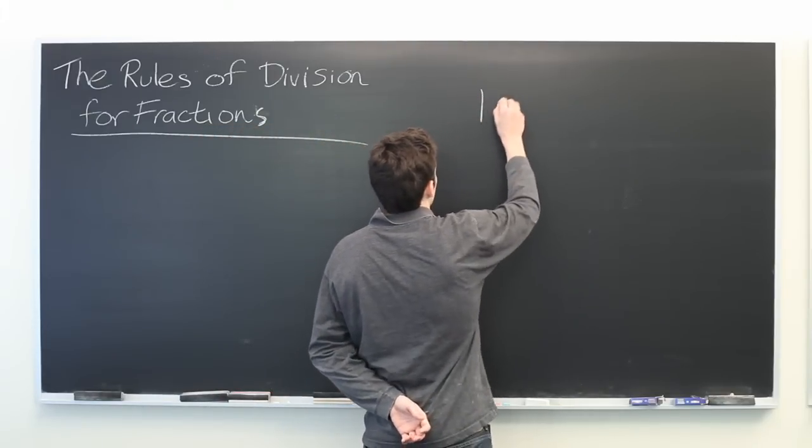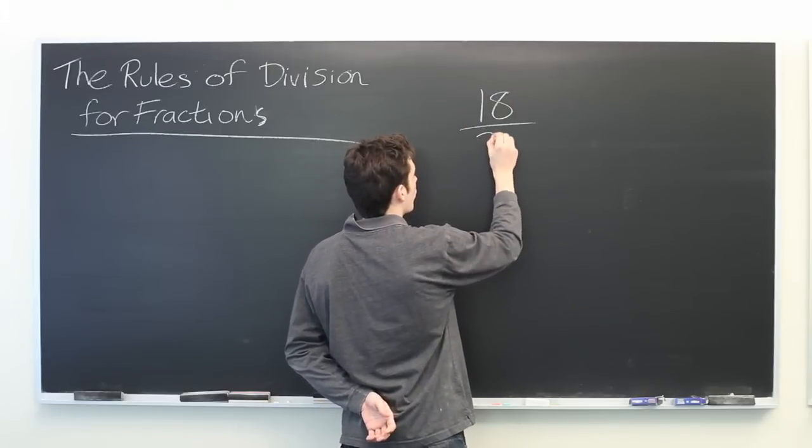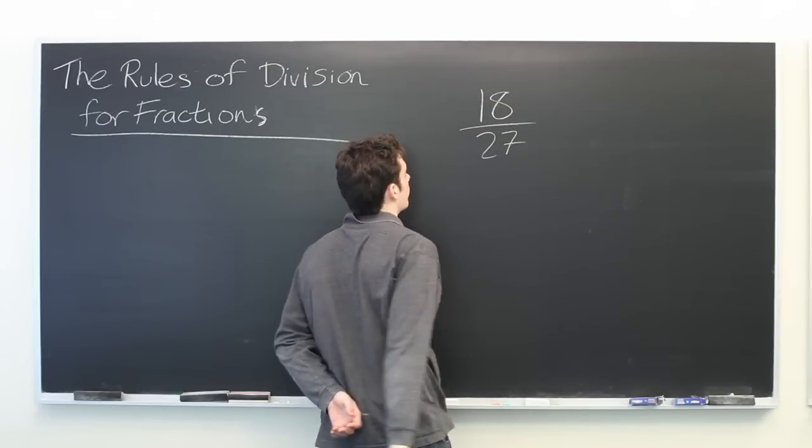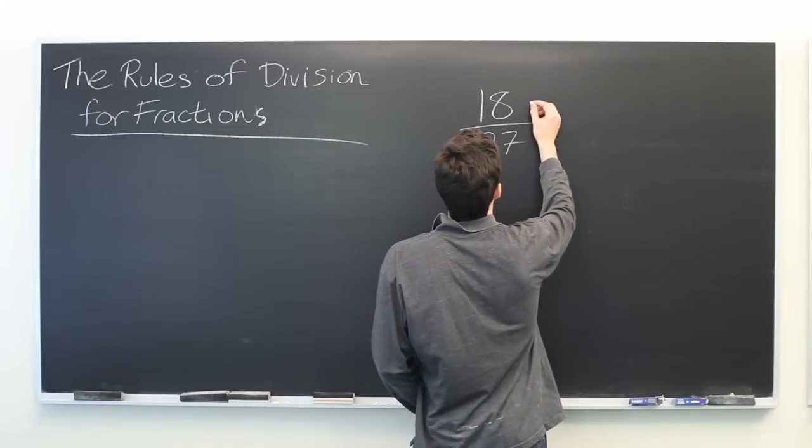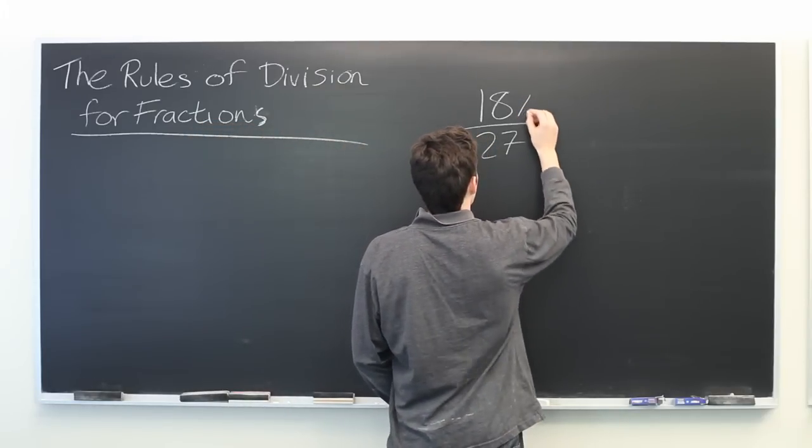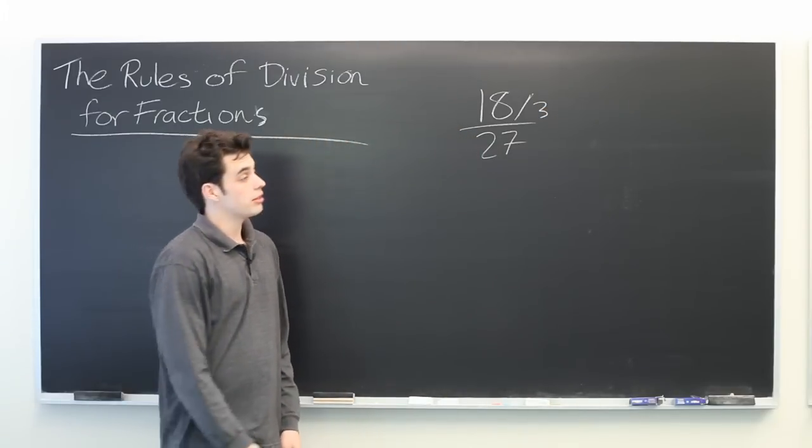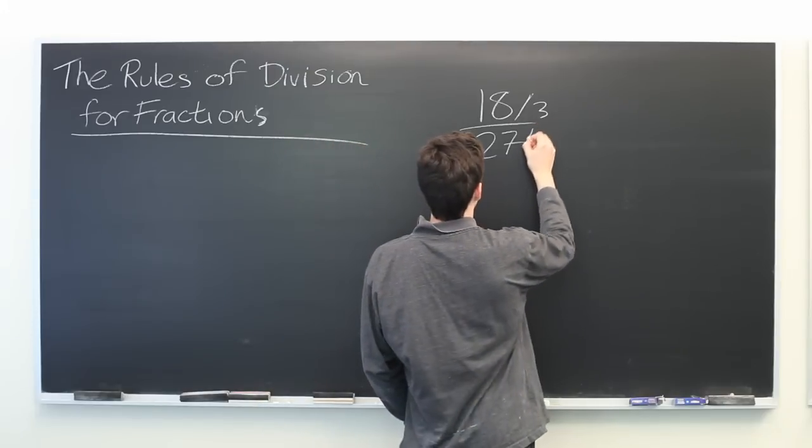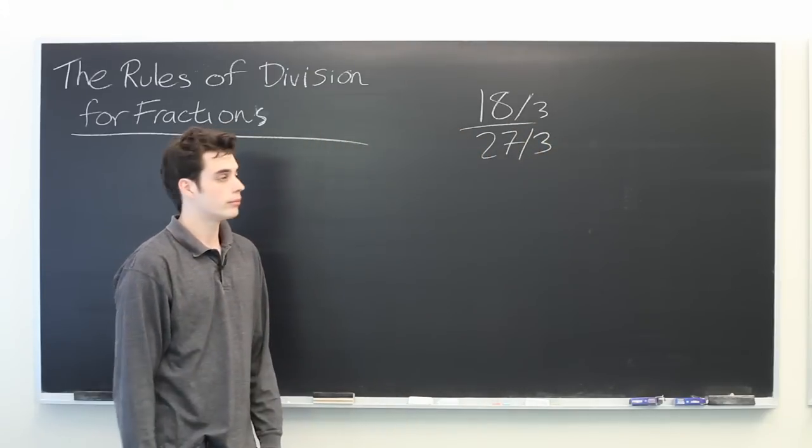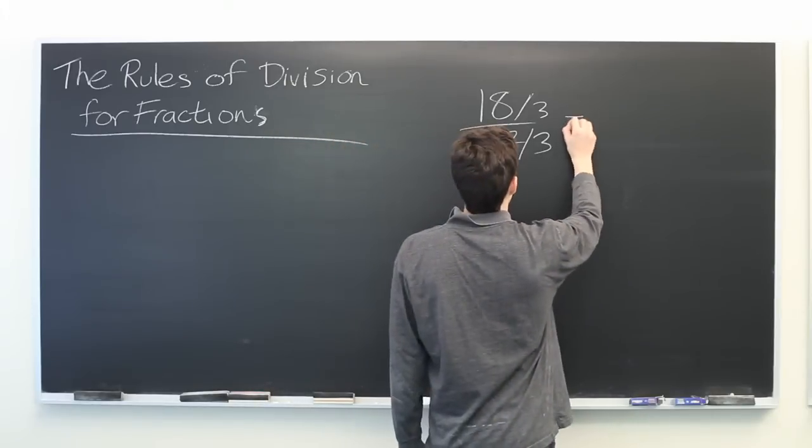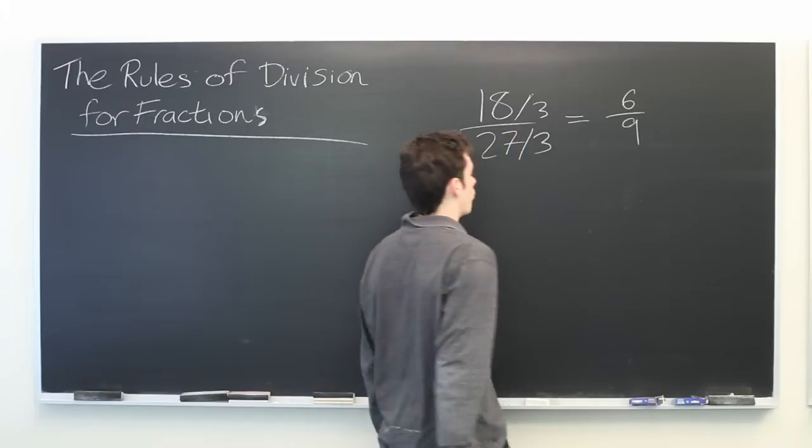Well, suppose that we've got some fraction. Let's say 18 over 27. Can we divide the top number by 3? The answer is yes, but the equality of the statement will only hold true if you also divide the bottom by 3. So this becomes 6 over 9.